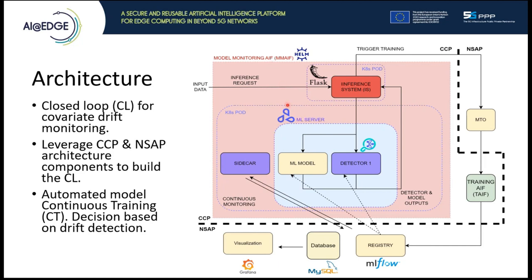For the purpose of this demo, we have built our own AIF that we have called the Model Monitoring AIF, which contains not only the machine learning model, but also other components intended to close the loop — for example, the detector to detect cases of drift, the sidecar, and the inference system. After the AIF detects a case of drift, the system is able to trigger the training AIFs in order to retrain the model and the detector and upload a new version to the MLflow registry. Finally, with the sidecar, the system is able to automatically detect new versions of the model and the detector and deploy them automatically, achieving continuous training based on drift detection.